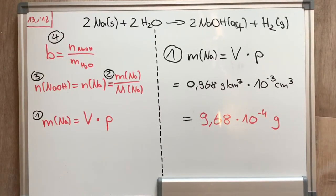To calculate the molality, you need the molar amount of caustic soda. The molar amount of caustic soda is equal to the molar amount of sodium.